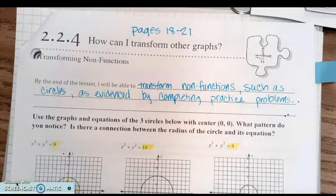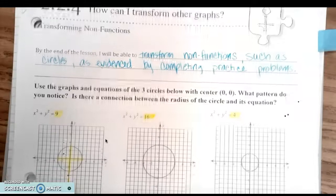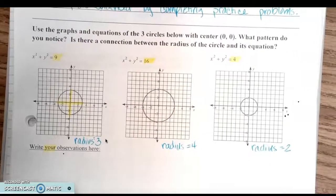This lesson is titled 'How Can I Transform Other Graphs?' and we're going to be transforming a circle today, which is considered a non-function. Why? Because if you do the vertical line test, it's going to pass two points at the same time instead of just one. By the end of the lesson, I will be able to transform non-functions such as circles, as evidenced by completing the practice problems.